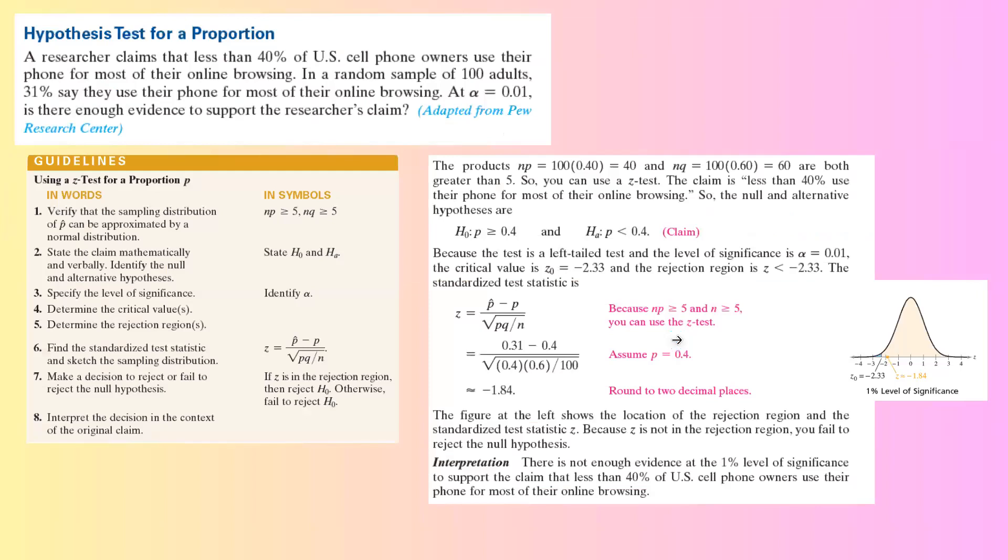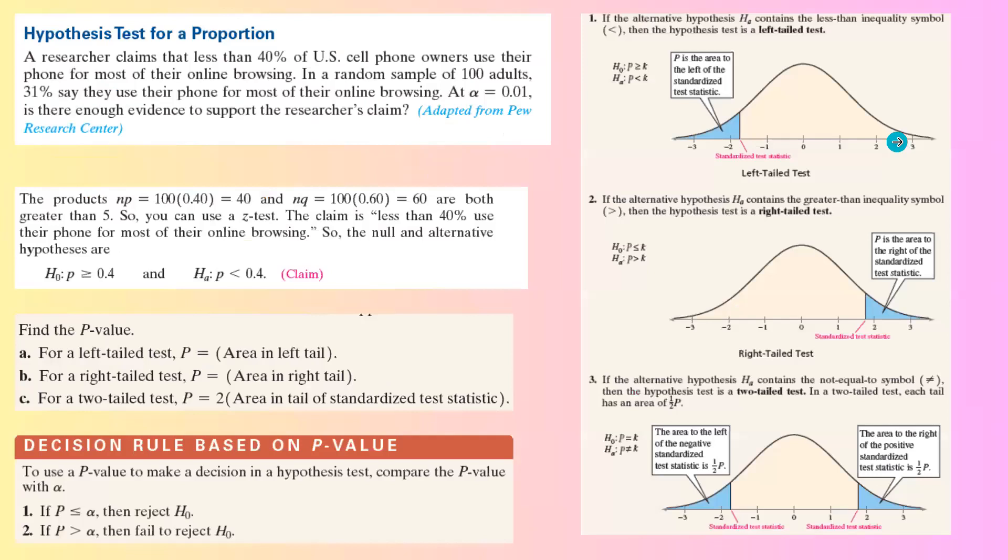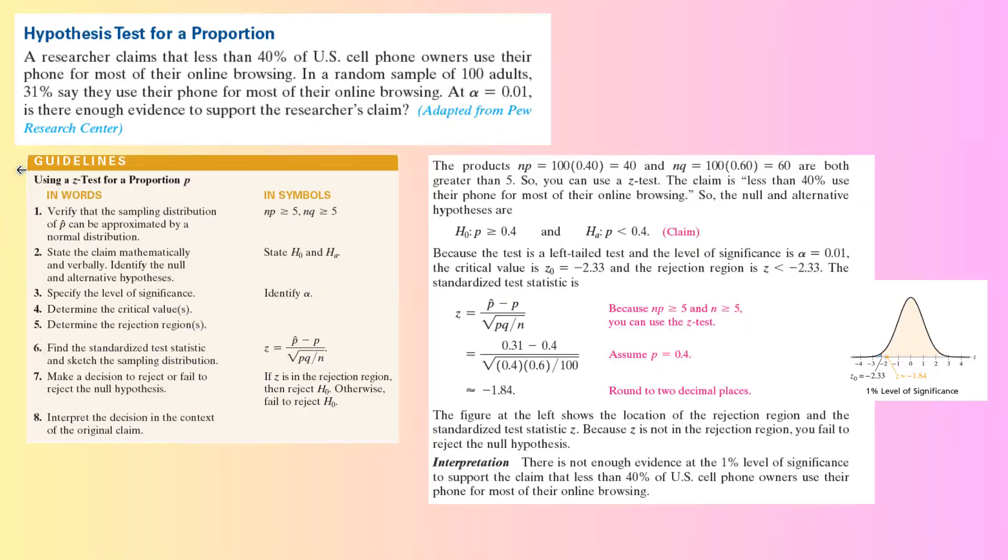I'm going to apply two methods using rejection region, and then we're going to use p-value.